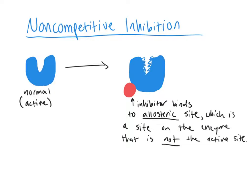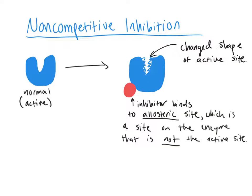The allosteric site is a pretty general term that just means it's not the active site — anywhere else on the enzyme. What we can see is that because this inhibitor bound somewhere else on the enzyme, it's actually changed the shape of the active site. So similar to competitive inhibition, our substrate is not going to be able to bind because it won't fit into that altered active site. Our substrate is just going to get rejected again and not bind, which means no product is being made, which means the enzyme is inactive.